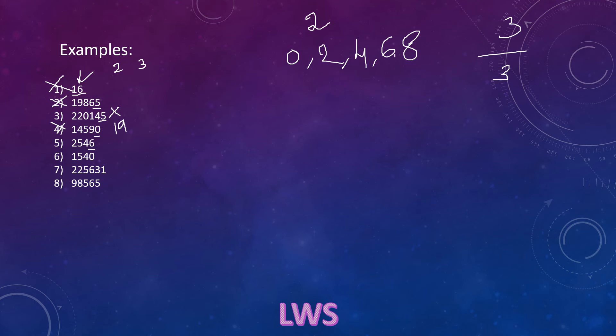So 6 is exactly divisible by 2. For divisibility by 3: 5 plus 2 is 7, 7 plus 4 is 11, 11 plus 6 is 17. So 17 is not exactly divisible by 3, therefore this is not exactly divisible by 6.